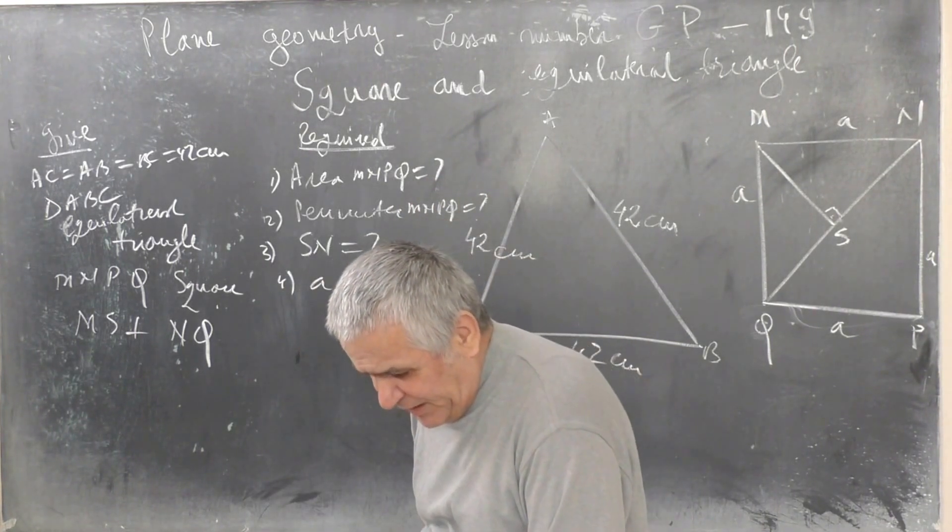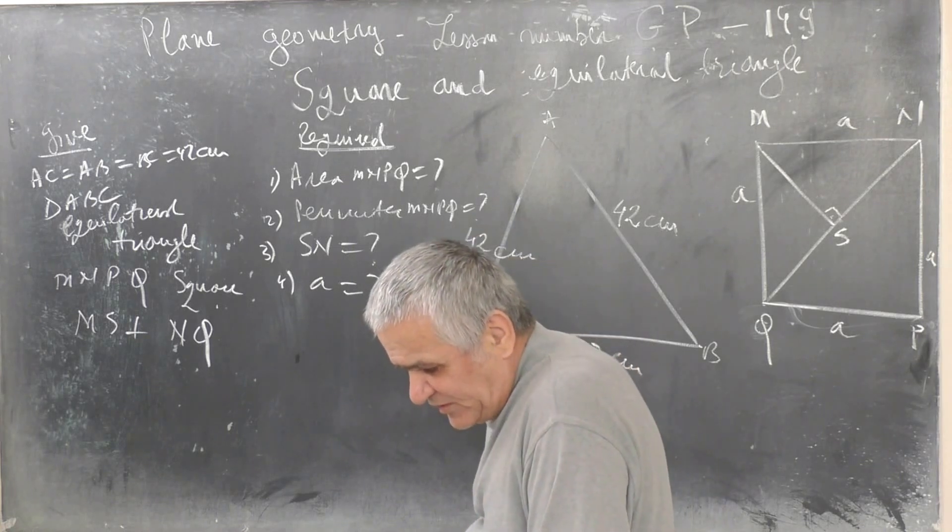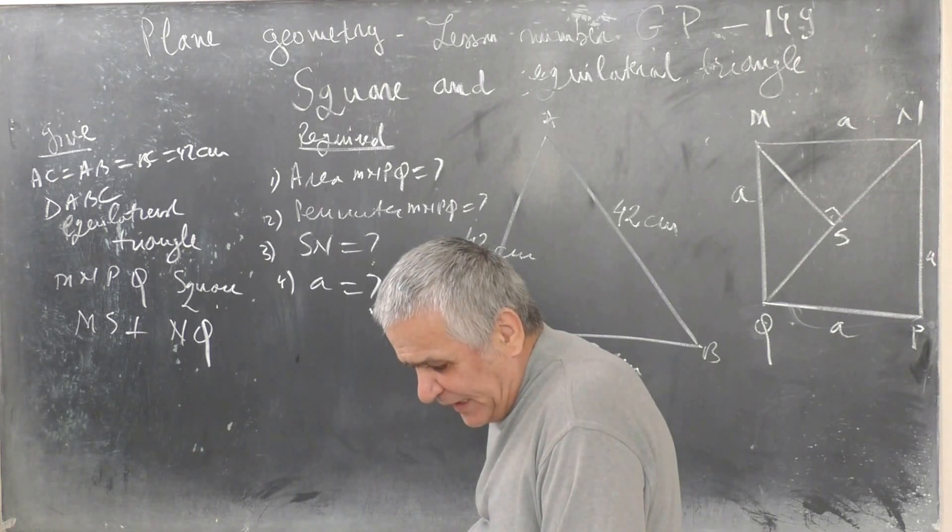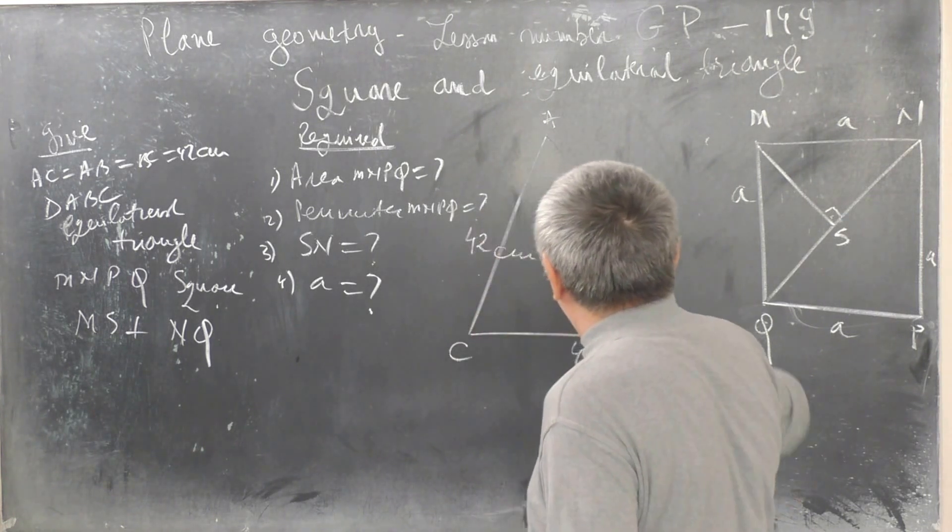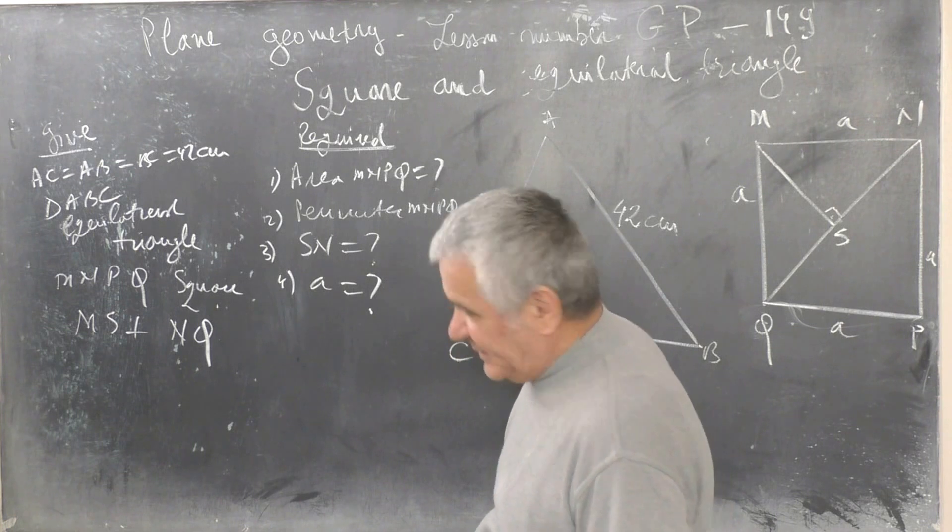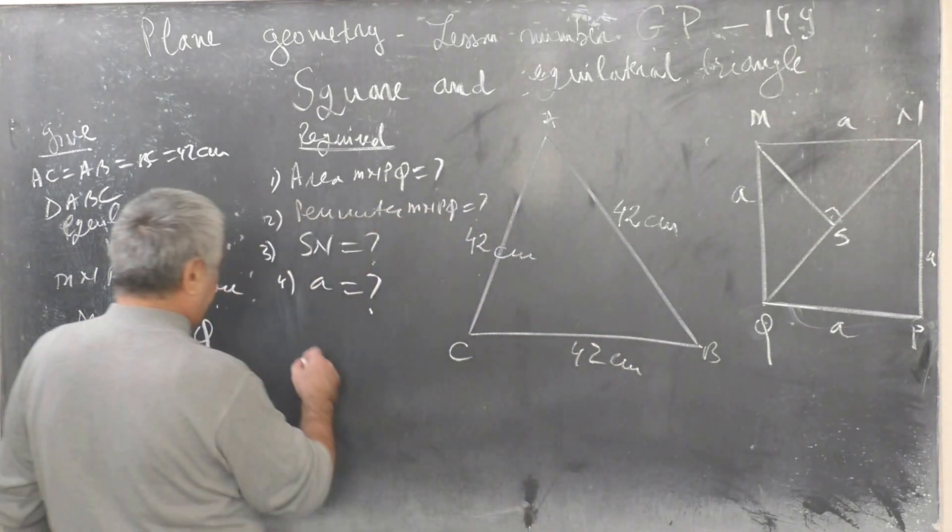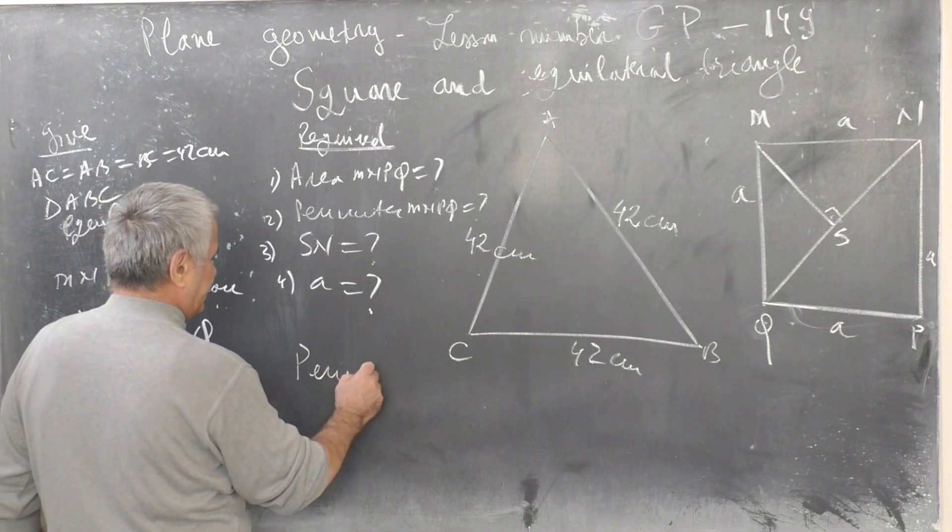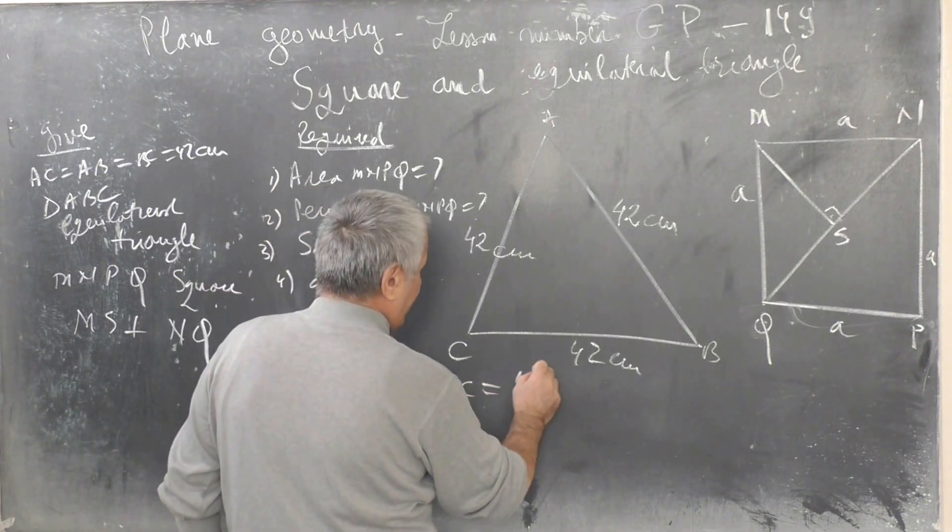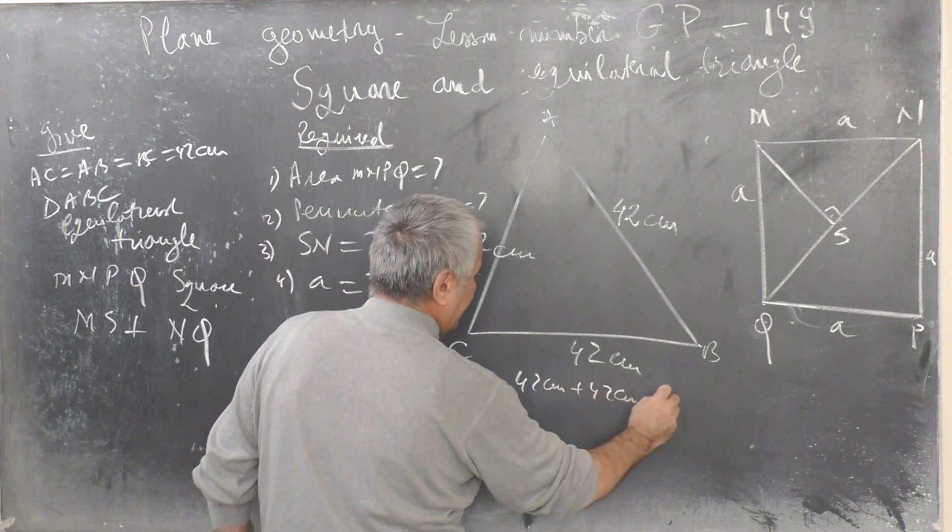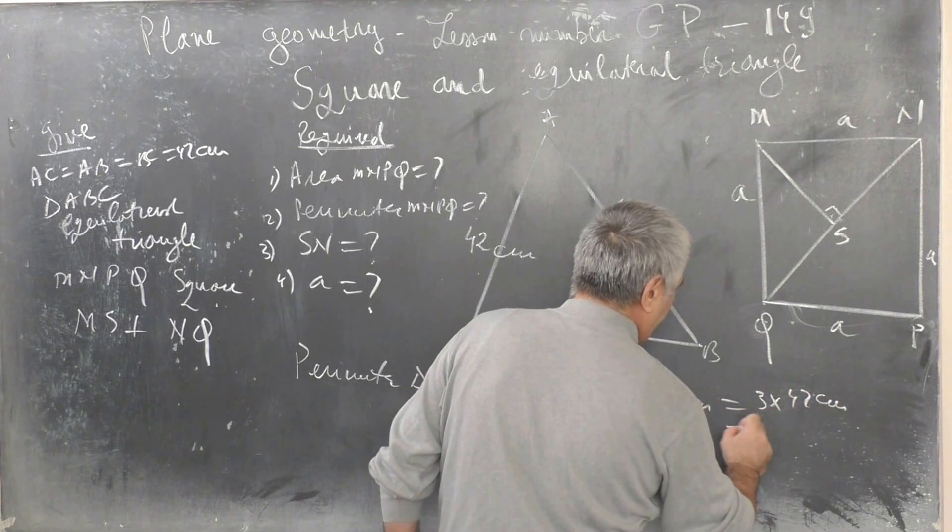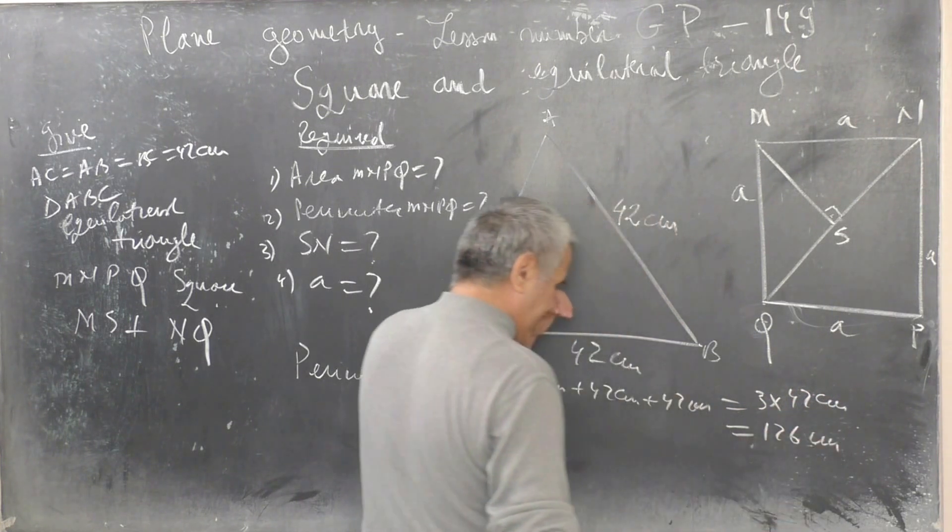Calculate the perimeter and area of a square that is equal to the perimeter of an equilateral triangle. The perimeter of the triangle is equal to 42 cm plus 42 cm plus 42 cm, which equals 126 cm.